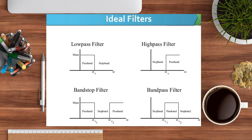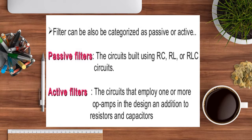In a low pass filter, the lower range of frequency is passed while the rest is stopped. In a high pass filter, the lower range is stopped and frequencies above the cutoff are passed. In a band pass filter, frequencies between two cutoff values are passed. In a band stop filter, a particular range is stopped and the rest is passed.